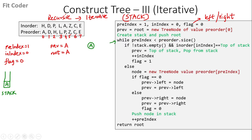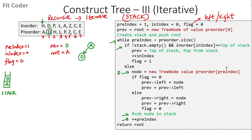We run a while loop until we iterate through the whole pre-order array. Inside the loop, we check if the stack is not empty and if the top of the stack equals the in-order index. The in-order index is pointing to H and the top of the stack is A — they are not equal, so we go to the else part. We create a new node with value D (the first index of the pre-order traversal). Flag is 0, so left of A points to D, previous becomes D, we push D to the stack, and increment pre-index to 2.